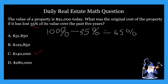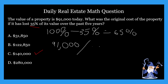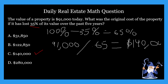From there, we need to look at the value of the property today. We're going to take that $91,000 and divide it by 0.65, or 65%. And what is that going to give us? That's going to give us $140,000. And that is our answer, C.